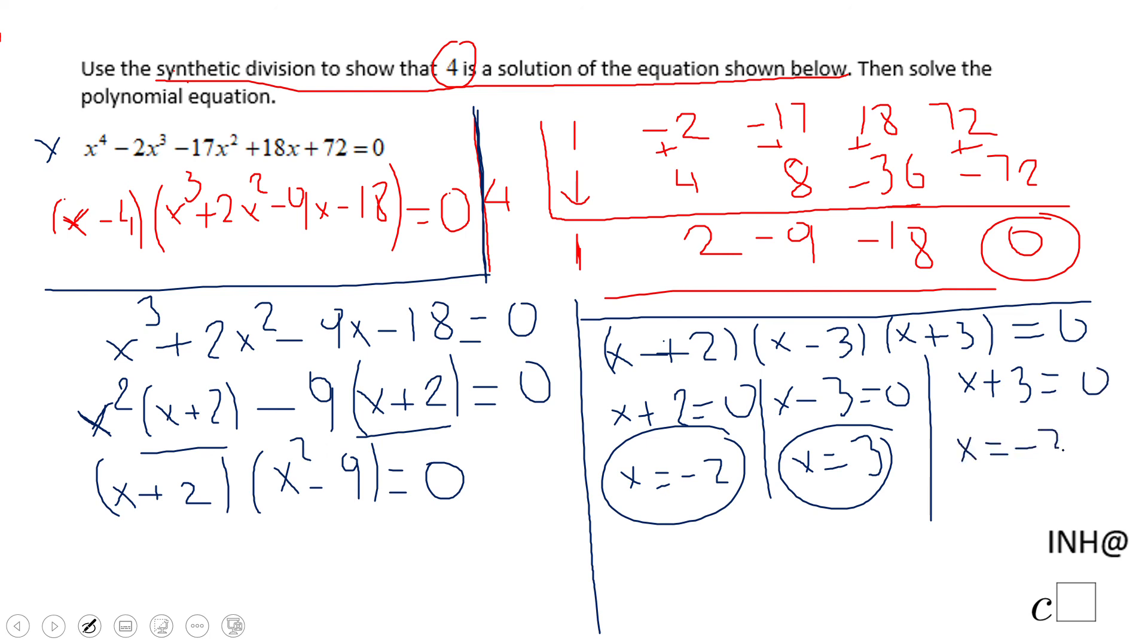And one more time, zero product property: x + 3 equals 0, that will give us x equals negative 3 as a solution. So now we have these three solutions for this third degree polynomial and x equals 4 here, don't forget about that.